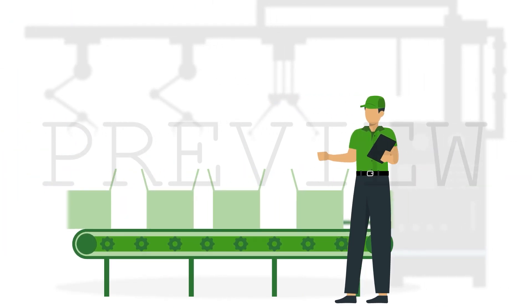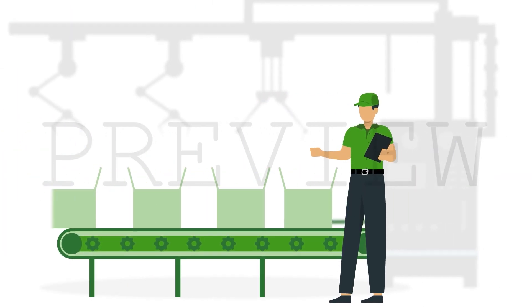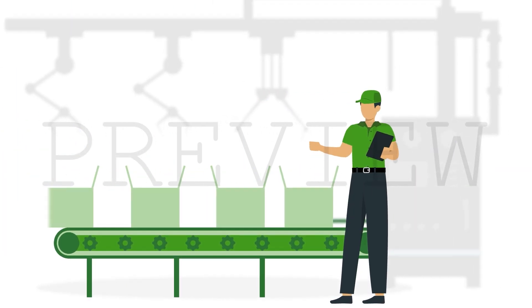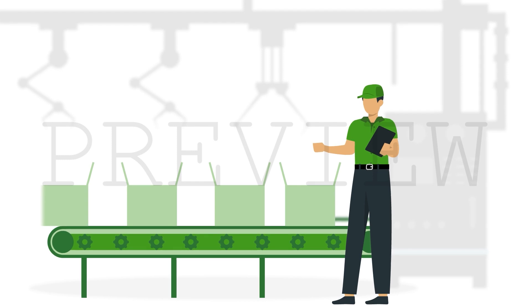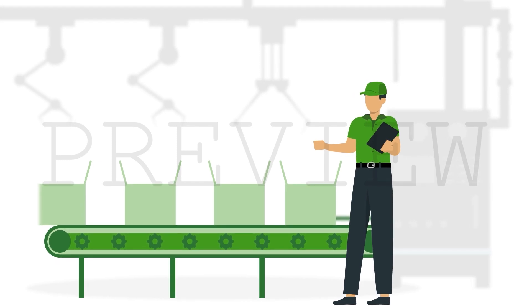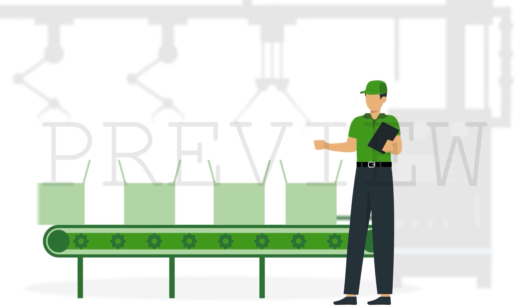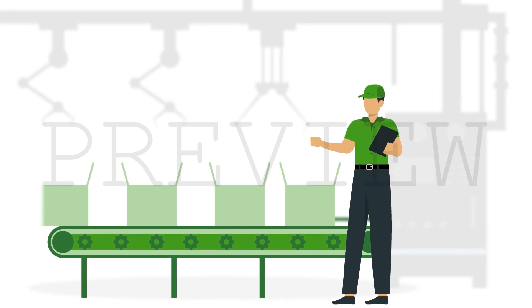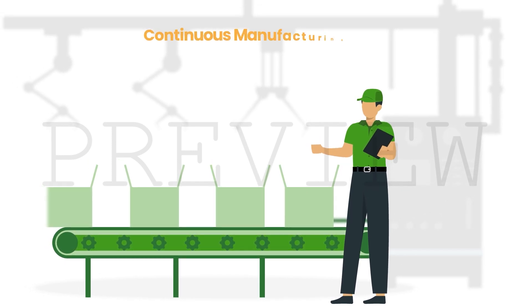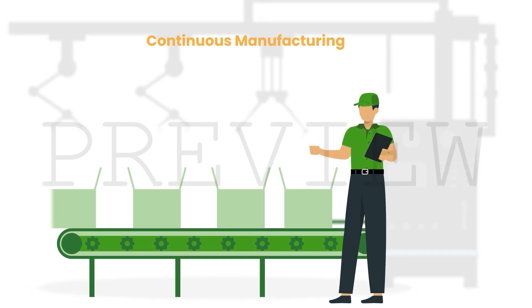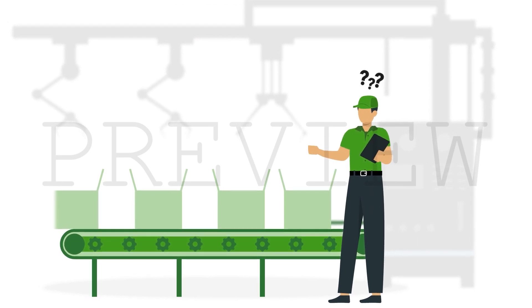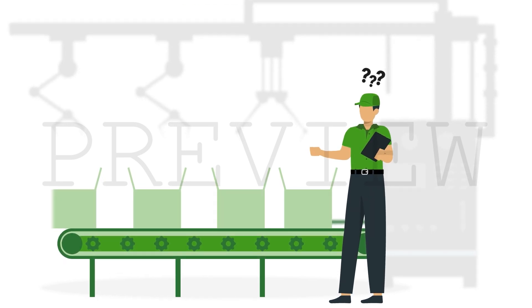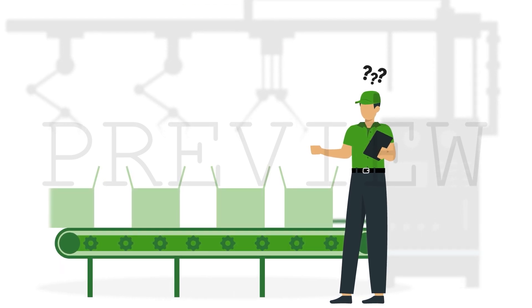If your goals include scaling up production for a single kind of product and maximizing output, you'll likely want to invest in a Continuous Manufacturing process. Operating around the clock offers a range of benefits.